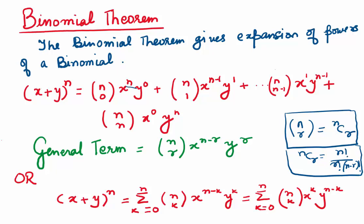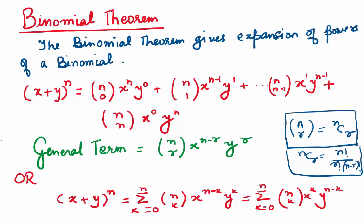You must have noticed the sum of the powers is always n: n plus 0 is n, n minus 1 plus 1 is n, 1 plus n minus 1 is n. So powers of x decrease and powers of y increase — it's very easy to remember the formula. There is a general term: nCr times x to the power n minus r, times y to the power r.